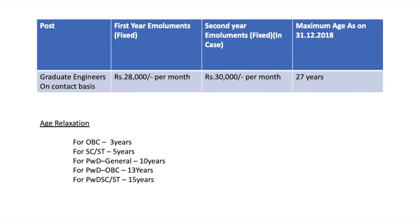What is the post? Graduate Engineers on Contract Basis. It is a one-year contract basis. You have a fixed salary — monthly 28,000 rupees.